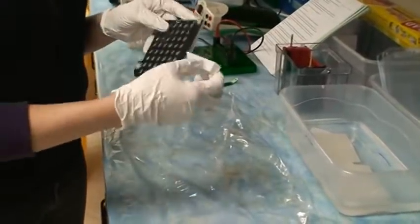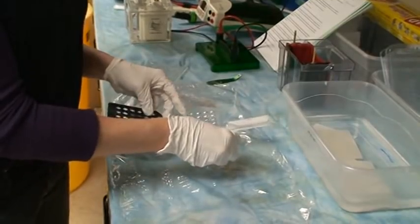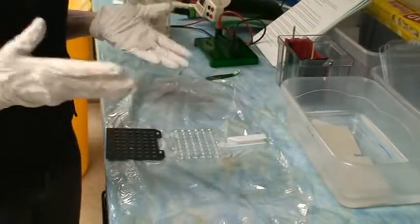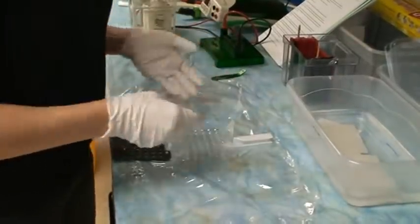You're going to open up this transfer cassette. So open it and lay the clear side down. The clear side is the side that your proteins are going to migrate towards. And then we're going to assemble this sandwich.